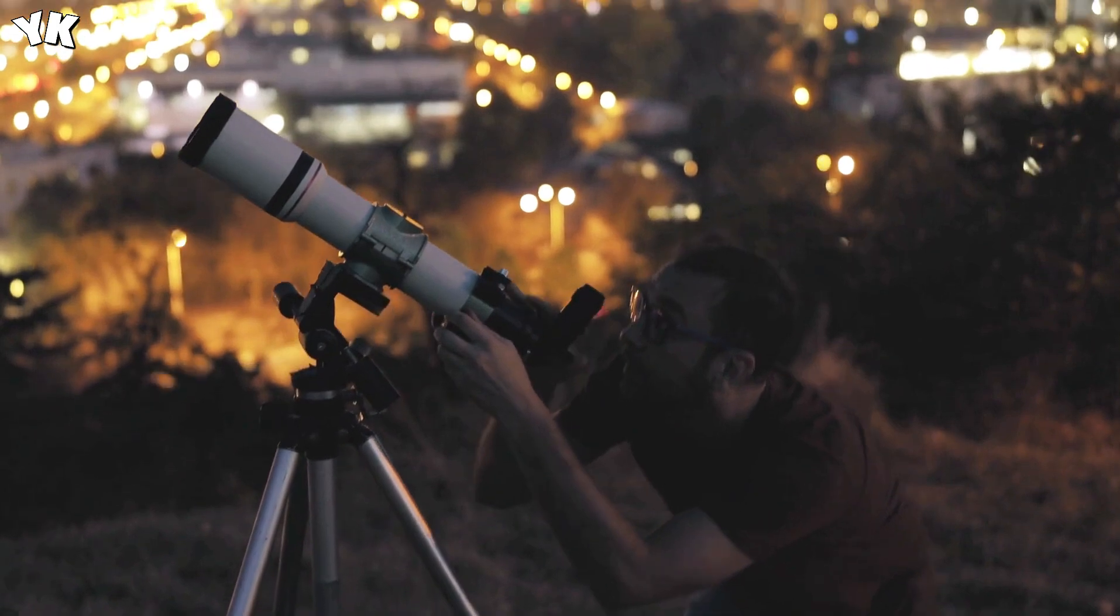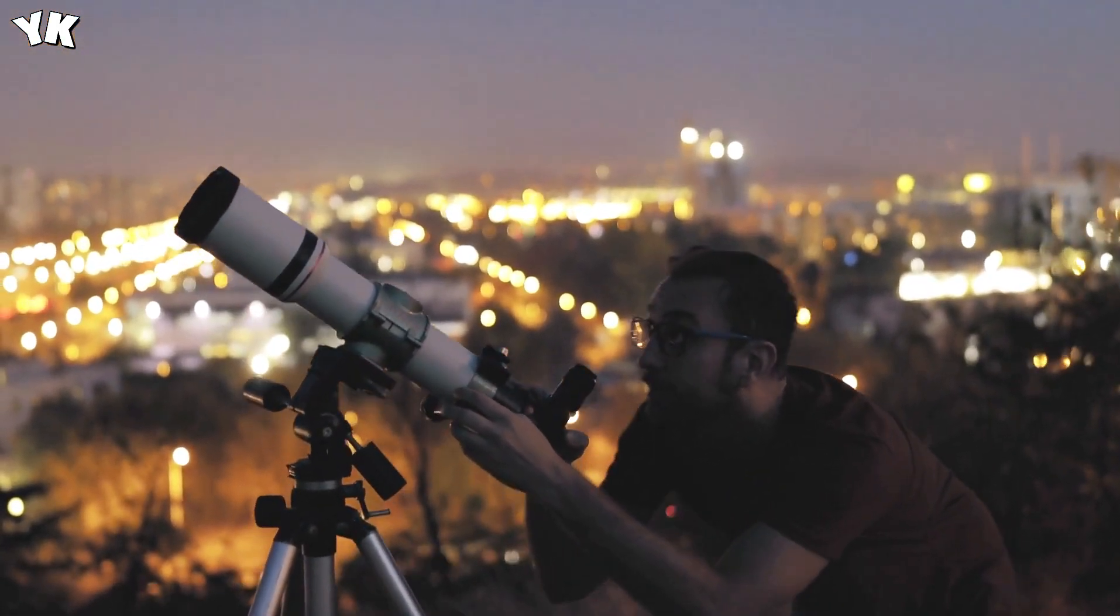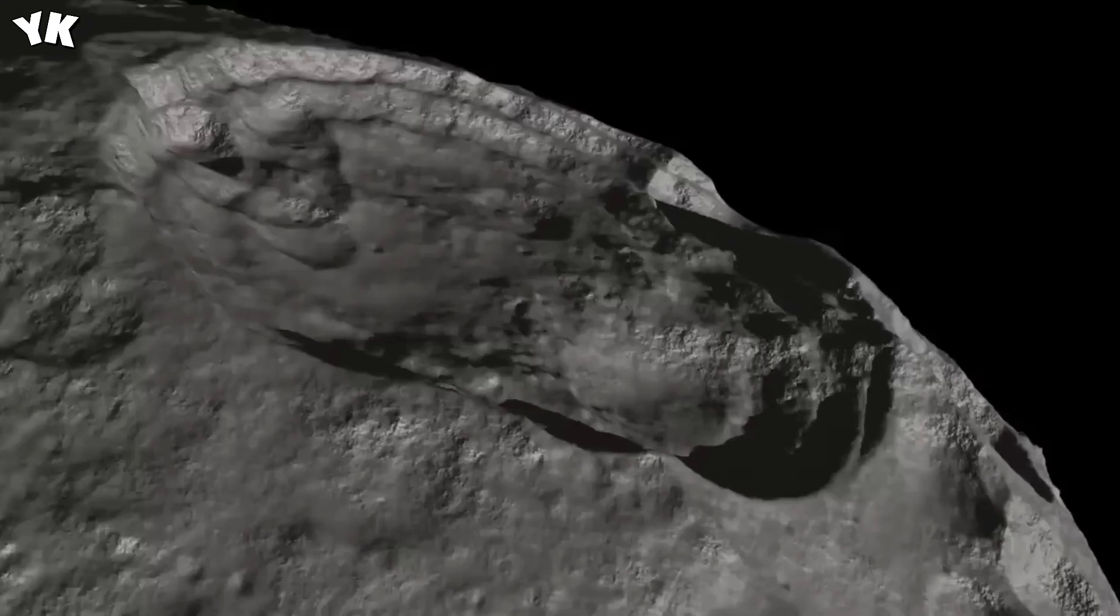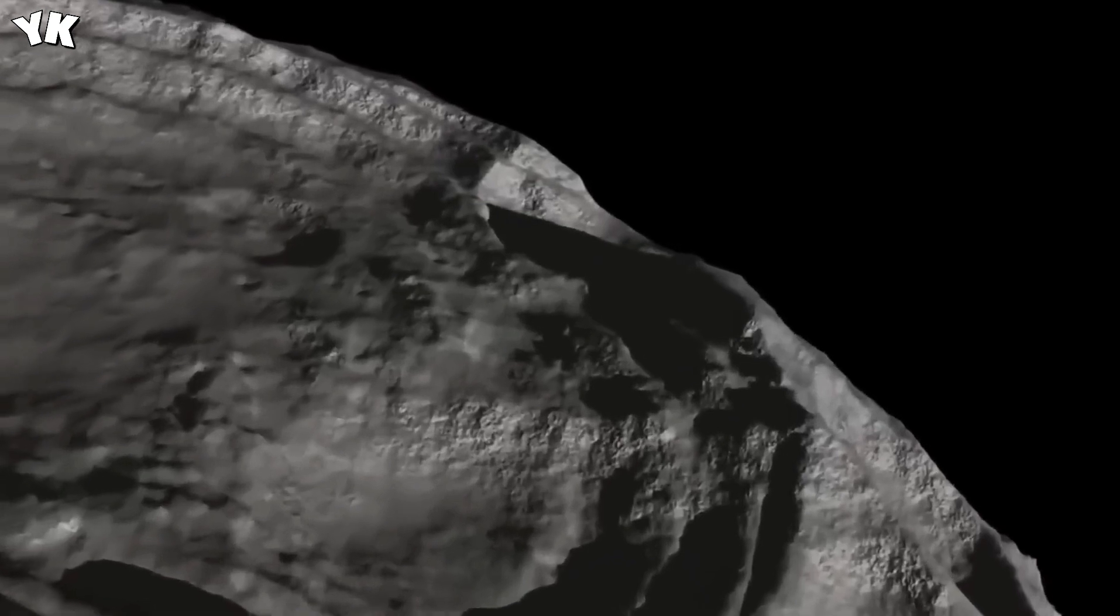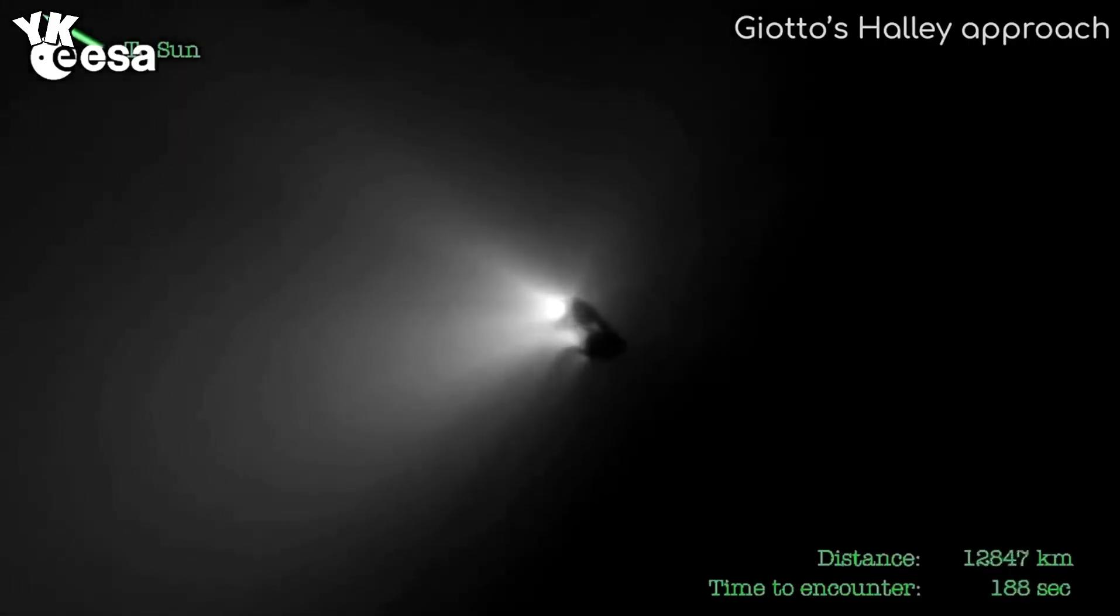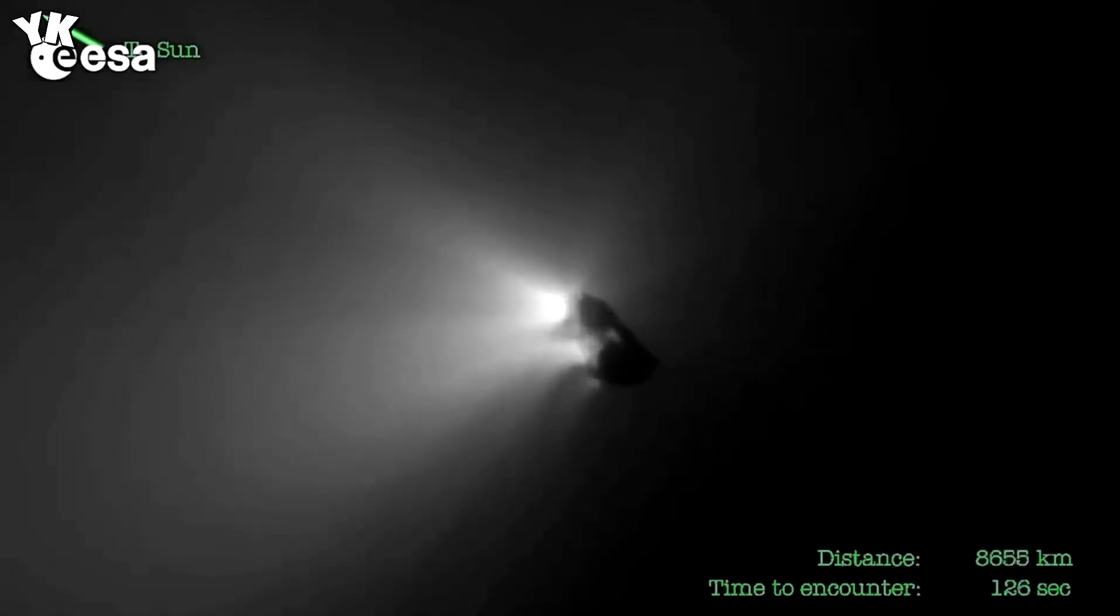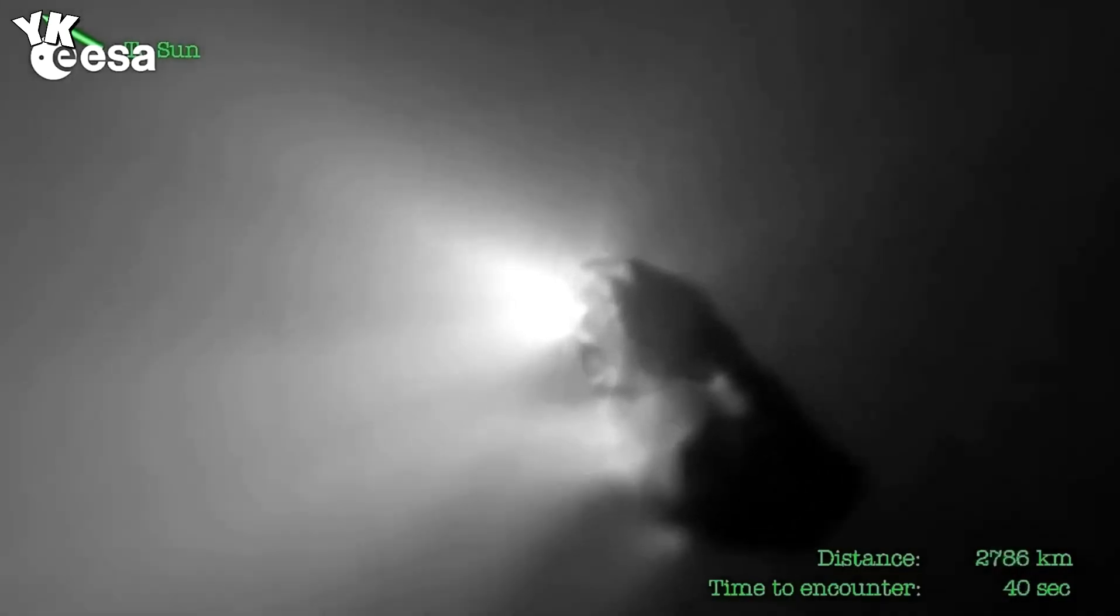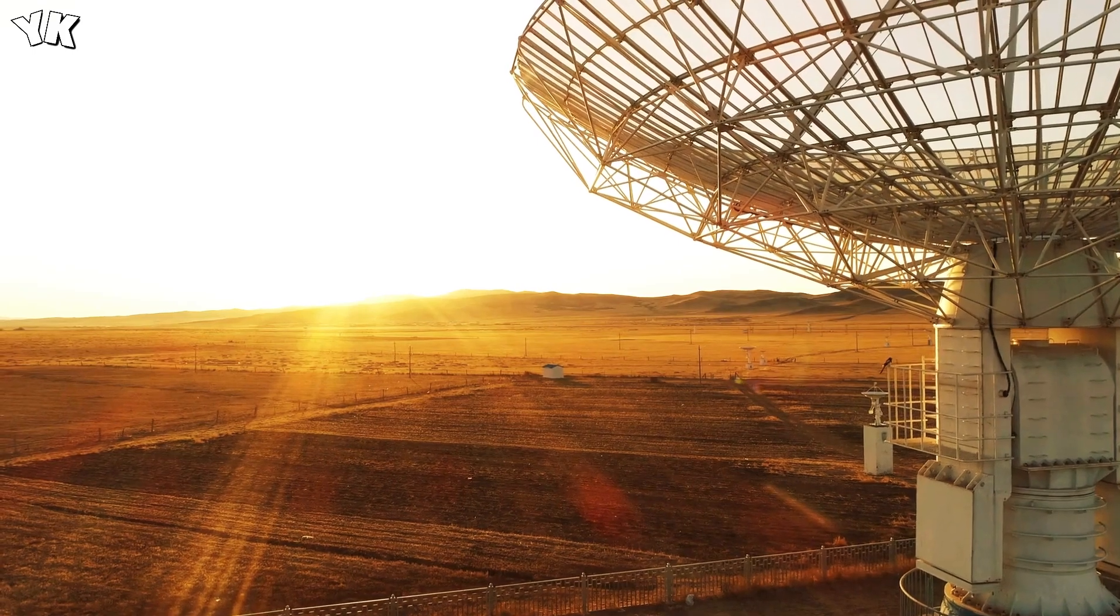On January 12, 2005, Deep Impact embarked on its journey atop a Delta II rocket. However, an early hiccup occurred when, within a day of departure, the spacecraft's onboard computers triggered a switch to safe mode due to a suspected fault, later traced back to a minor programming error regarding heat tolerances. Fortunately, engineers swiftly rectified the issue, allowing the mission to proceed. Over the next six months, Deep Impact traversed 429 million kilometers to rendezvous with Temple 1, executing precise course corrections along the way.